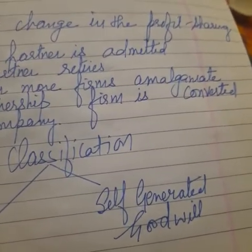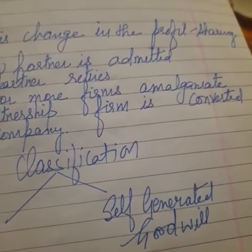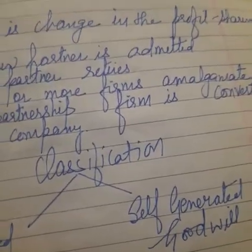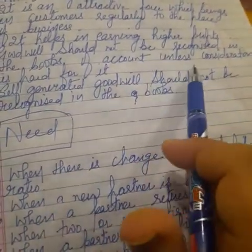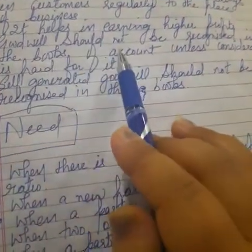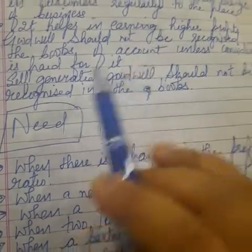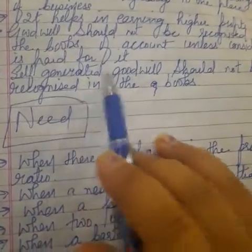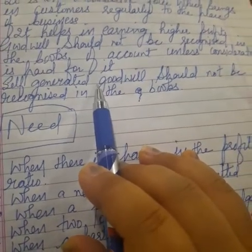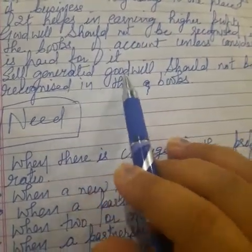The next type is Self-Generated Goodwill, which is not purchased but is generated by providing good services, good quality products, and at affordable prices. Coming back to the point — Goodwill should not be recognized in the books of account unless the consideration is paid for it. That means as long as we don't purchase Goodwill, it has no actual recorded value, and we cannot record it in the books. Self-Generated Goodwill should not be recognized in the books because we have created it ourselves — we haven't purchased it or paid any consideration for it. Only if it is purchased do we record it; otherwise there is no value recorded in the books of account.